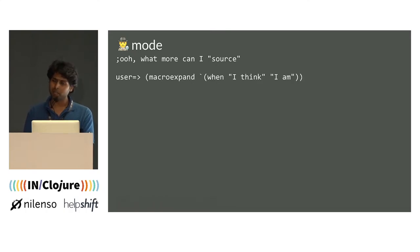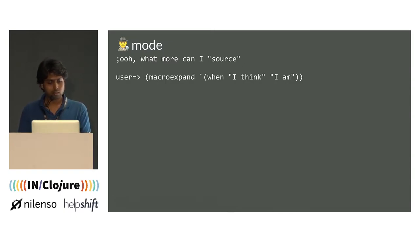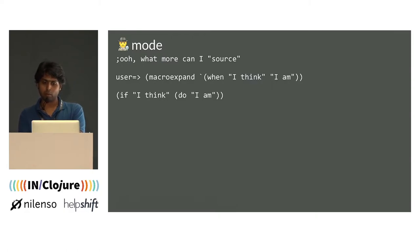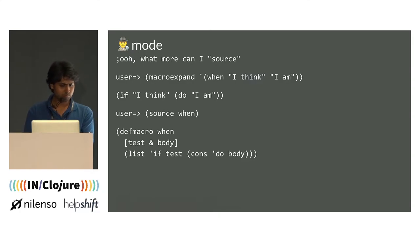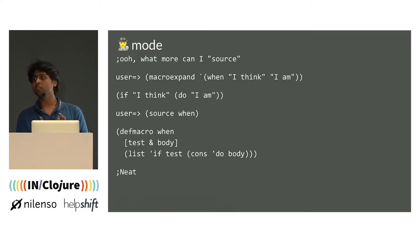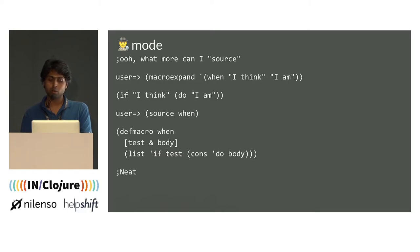`when` is a good usage of IF but allows only the positive condition. When I expand it, it evaluates to an IF with a test condition and a sequence of forms to evaluate. Going back to the source for `when`, it looks pretty neat: when test condition, ampersand body, there's a `list` function, a single apostrophe before `test`, a `cons`, and then `do body`. `list` is allowing us to generate code without evaluating it as literals, essentially generating something like 'IF I do, I am' instead of just 'when I think I am.'